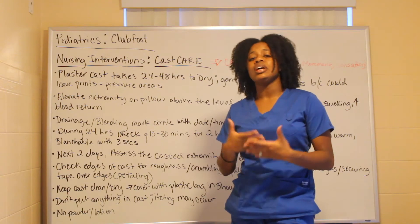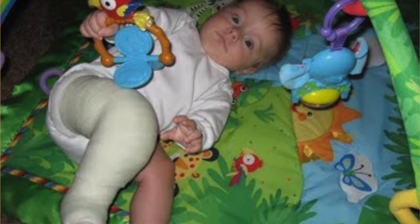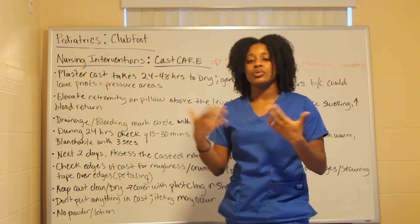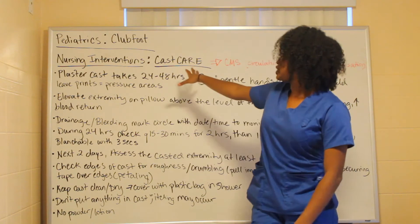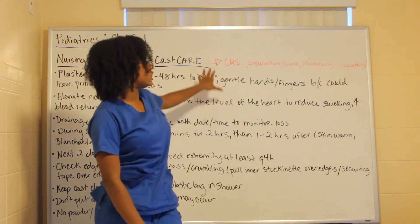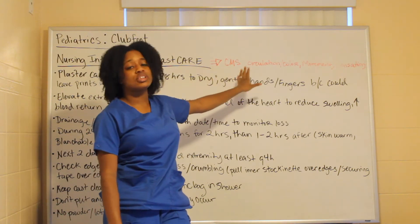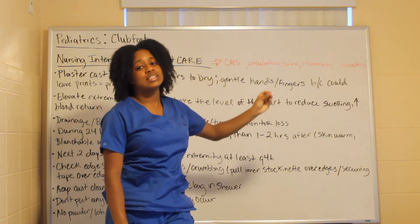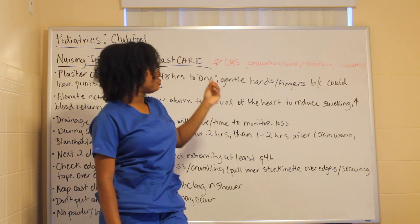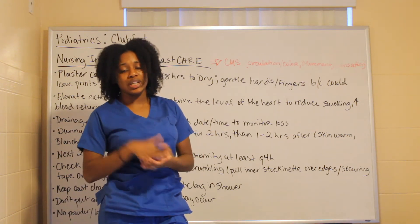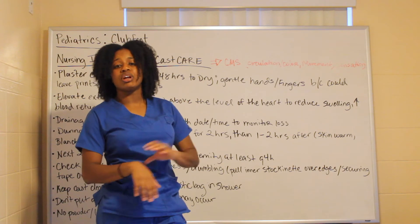The main nursing intervention is cast care, since the cast is on for eight to twelve weeks, switching every one to two weeks. The most important thing — highlighted in red — is CMS: circulation, color, movement, and sensation. This applies to all cast care, not just pediatrics.